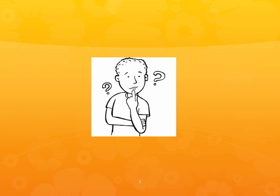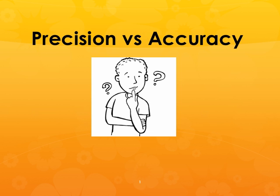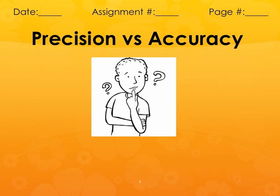Hi, so what I need you to do is open your composition book and put in whatever assignment number your class happens to be on, your page number, the date, and all that. We're going to be talking about precision and accuracy, so you might want to pause here and get all that filled out and get your title on your note page.